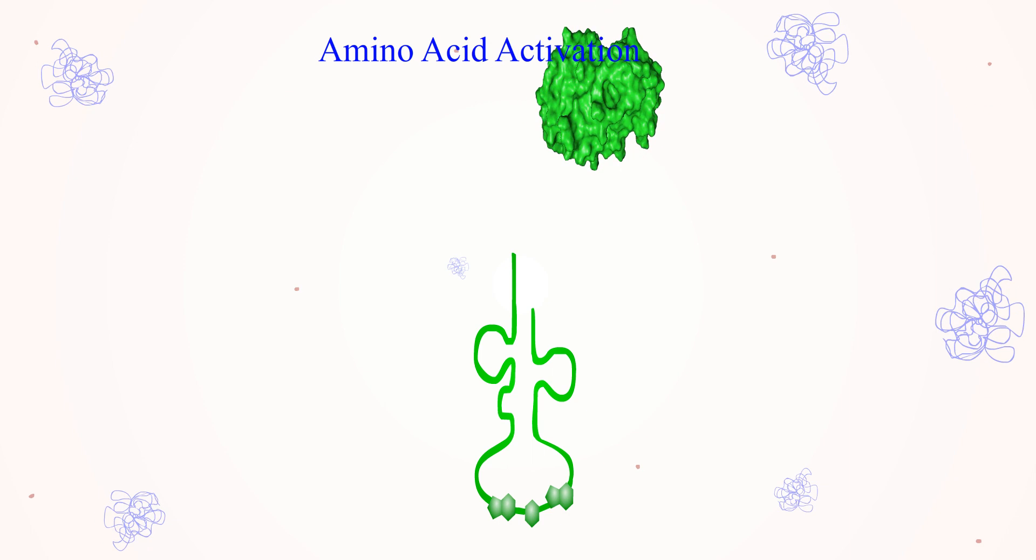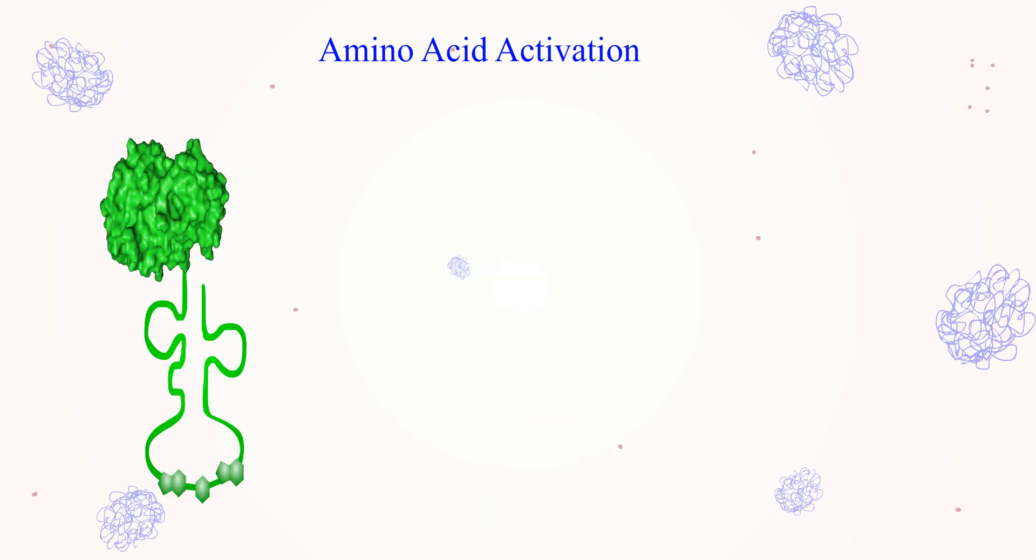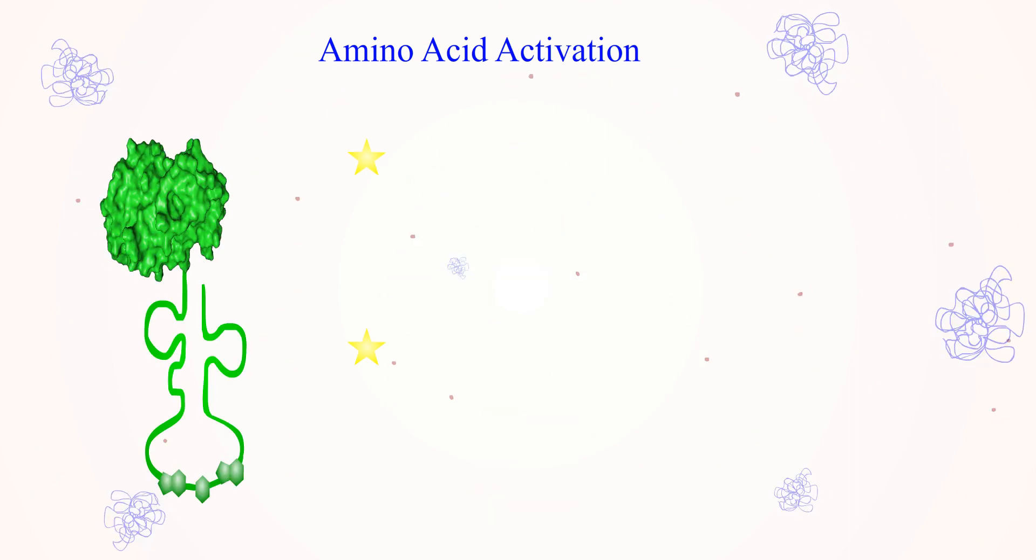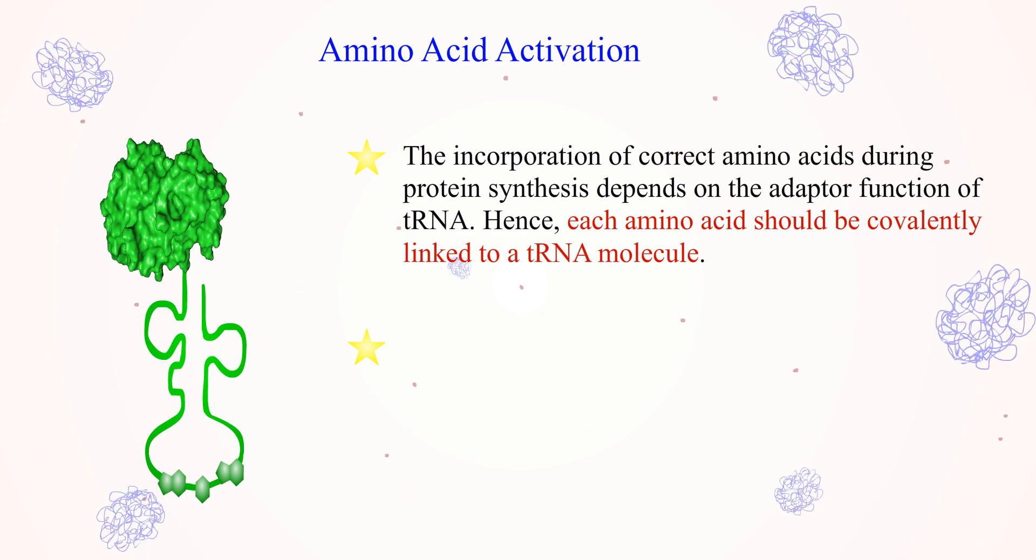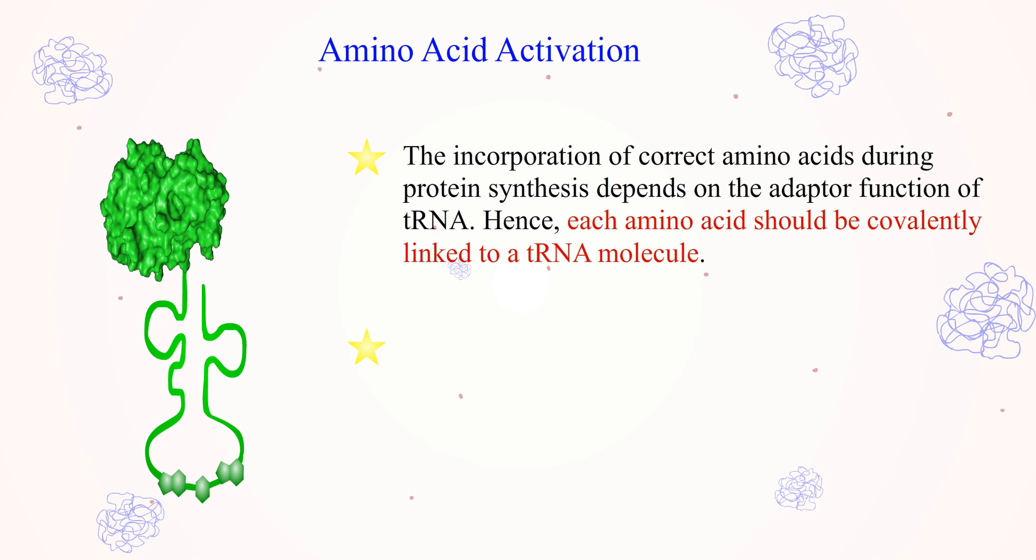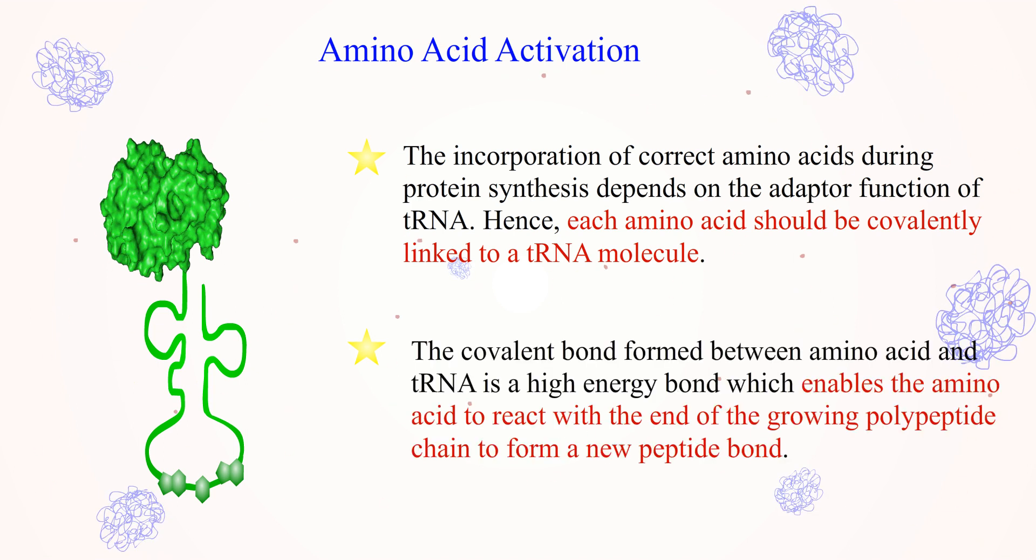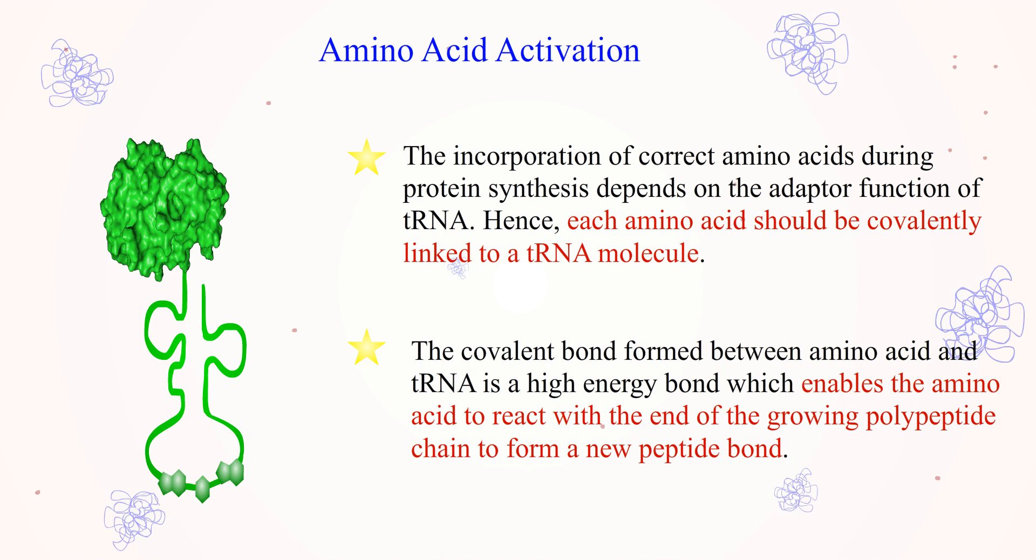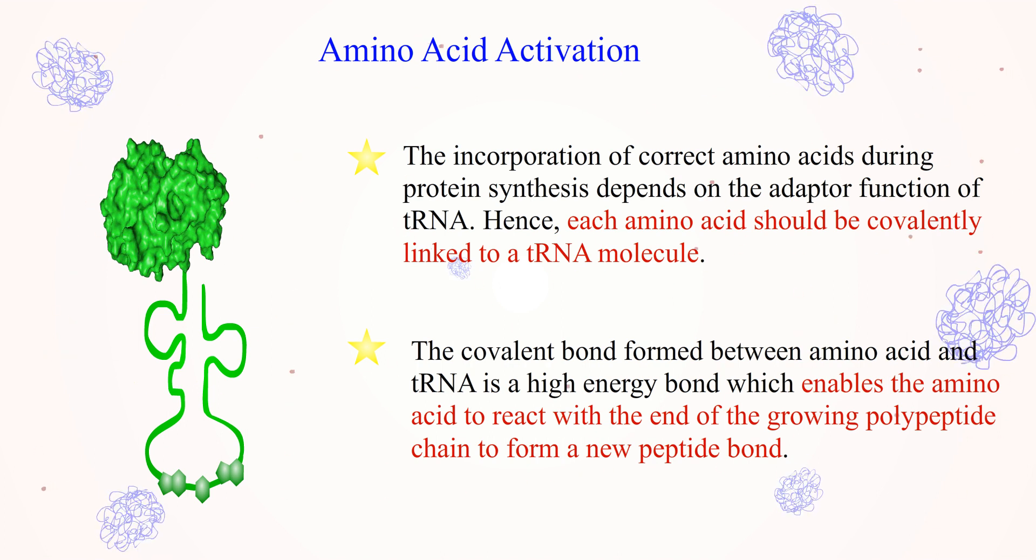Amino acid activation: The process of loading tRNA with amino acid is known as amino acid activation. This process is important because the incorporation of correct amino acids during protein synthesis depends on the adapter function of tRNA. Hence, each amino acid should be covalently linked to a tRNA molecule. The covalent bond formed between amino acid and tRNA is a high-energy bond which enables the amino acid to react with the end of the growing polypeptide chain to form a new peptide bond.